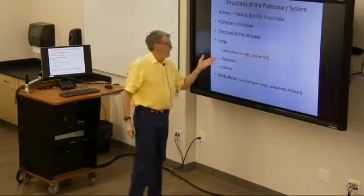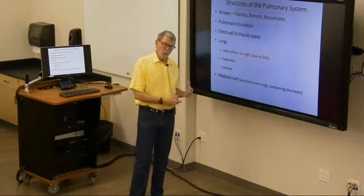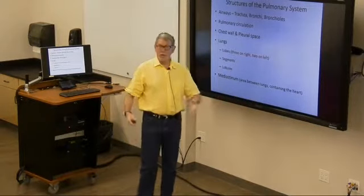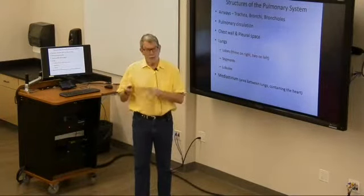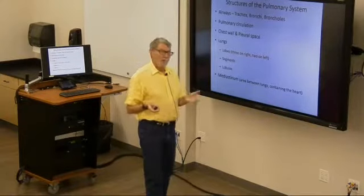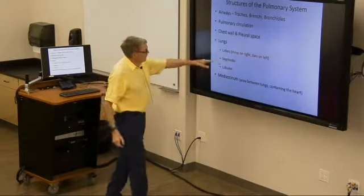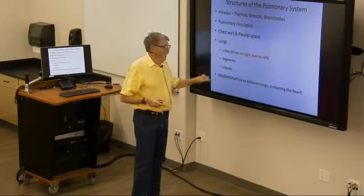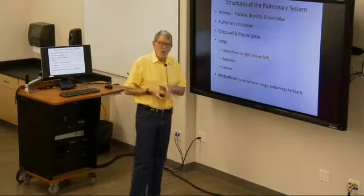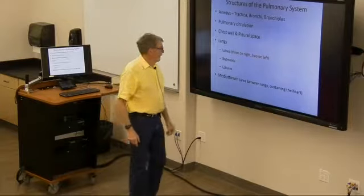The lungs: you have three lobes on the right, two lobes on the left. Every once in a while you'll have a lobar pneumonia that's just in one lobe, or you might remove an entire lobe for lung cancer. Smaller segments, then lobules, smaller yet — smaller and smaller structures that contain the alveoli.